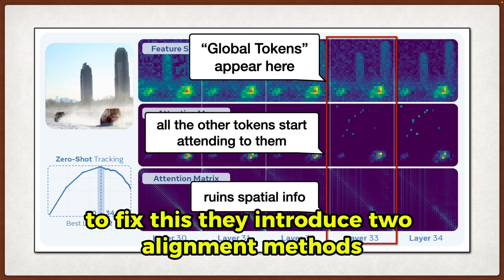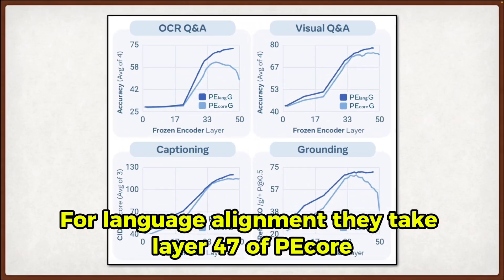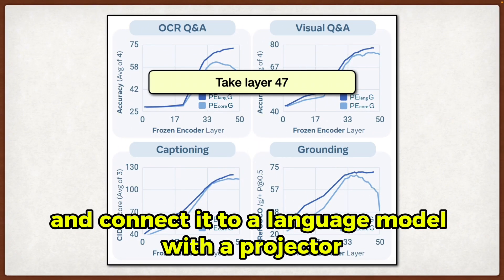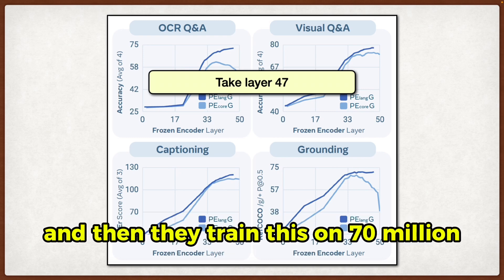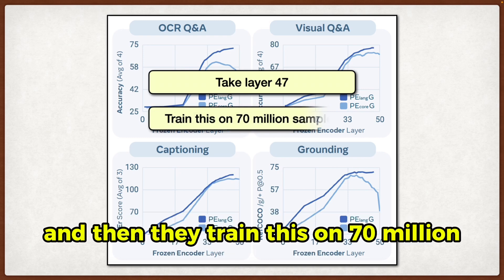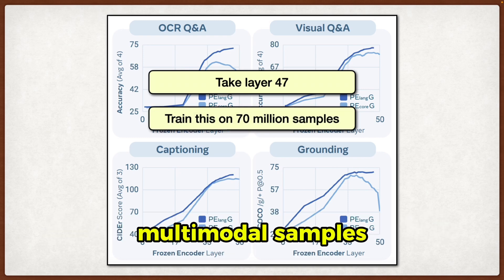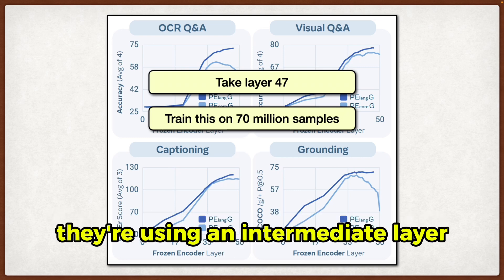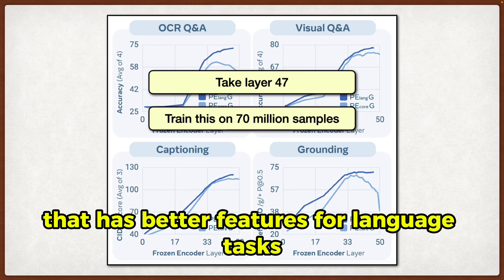To fix this, they introduce two alignment methods. For language alignment, they take layer 47 of PeCore and connect it to a language model with a projector, then train this on 70 million multimodal samples. The key is they're not using the last layer — they're using an intermediate layer that has better features for language tasks.